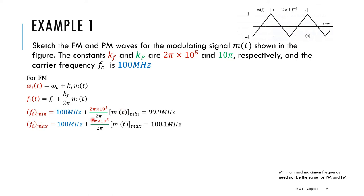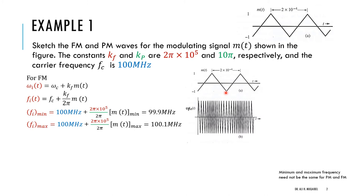The 2π cancels, and we get 99.9 megahertz as the minimum instantaneous frequency and 100.1 megahertz as the maximum. Here's how things look — of course the difference in frequency is not easy to visualize, but we can sketch with arrows indicating the frequency at each point. Wherever the message is zero, we get the carrier frequency of 100 megahertz.